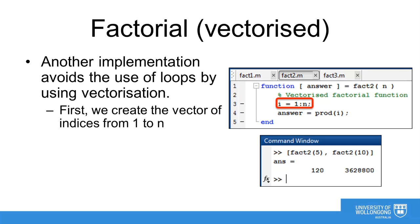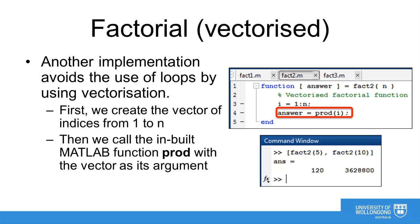Our first statement creates an array of numbers from 1 to n using the colon operator. Then we call the MATLAB function prod, which computes the product of an array of numbers. Notice that we could simplify these statements even further by doing away with the variable i altogether, and simply inserting the vector 1:n into the prod function directly. Again we can run a few examples from the command window to confirm correct operation.